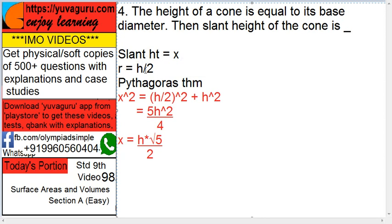By Pythagoras theorem, x square, the hypotenuse square, equals base square plus height square. So (h upon 2) the whole square plus h square. So solve this. This becomes h square upon 4 plus h square, which is 5h square upon 4.